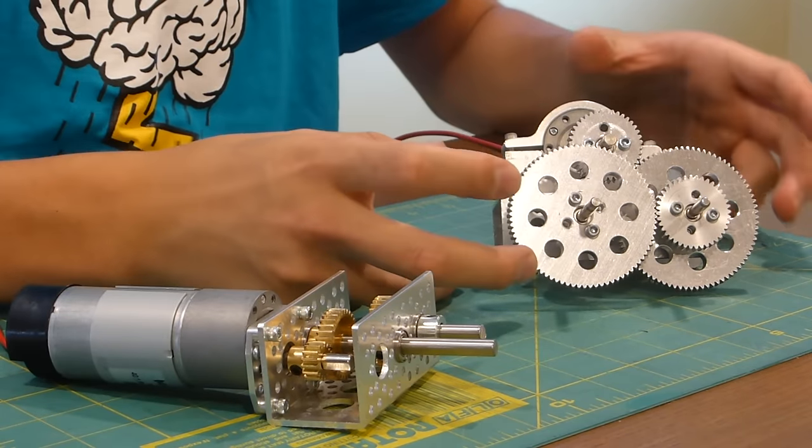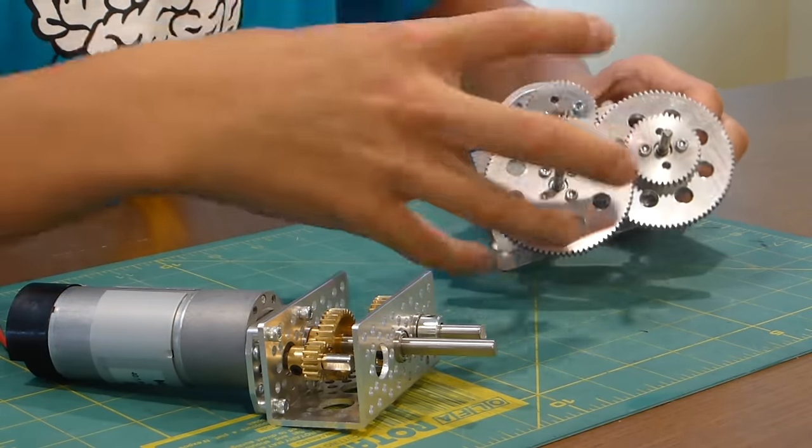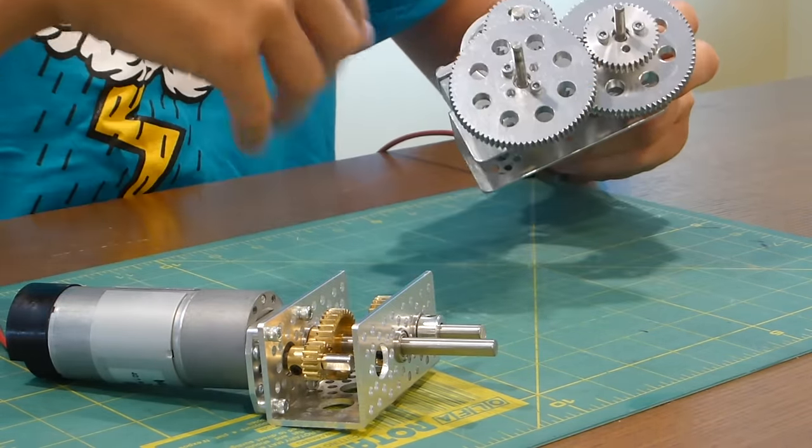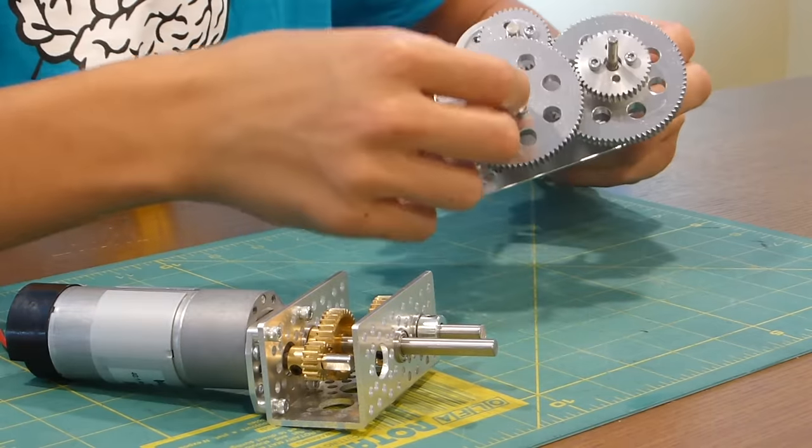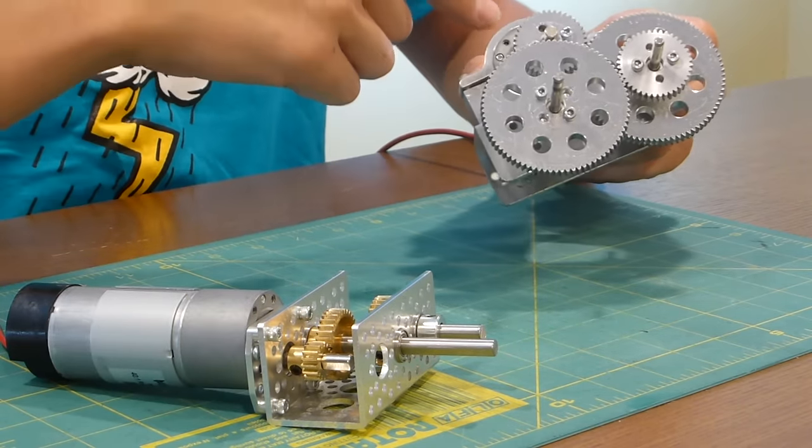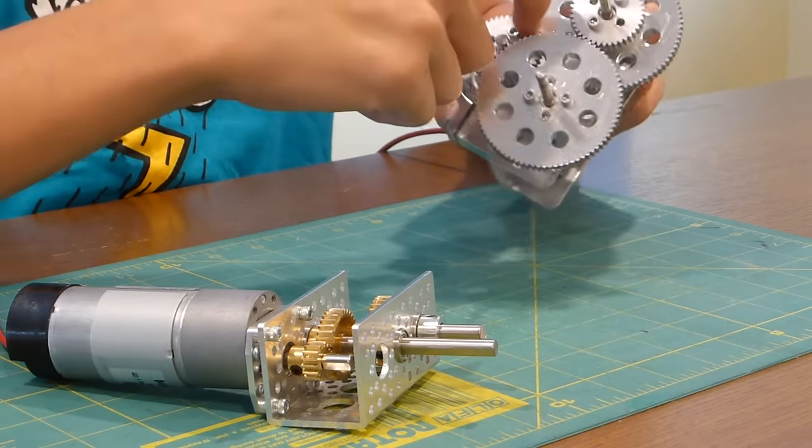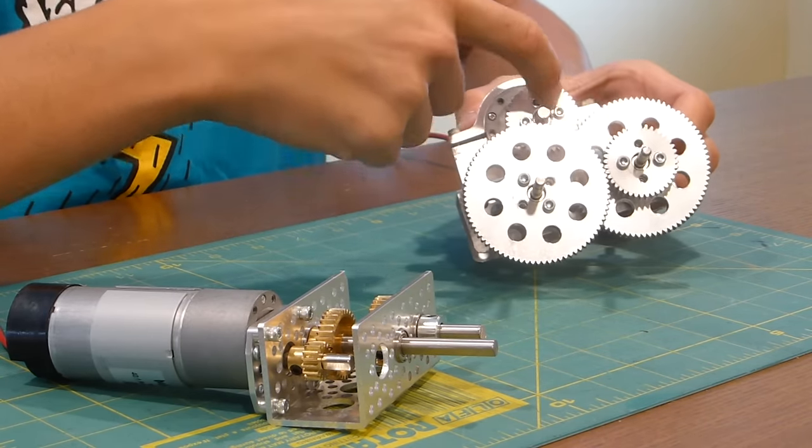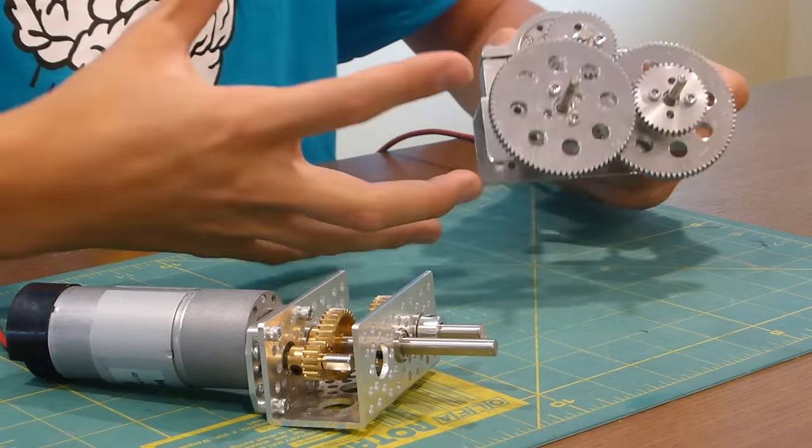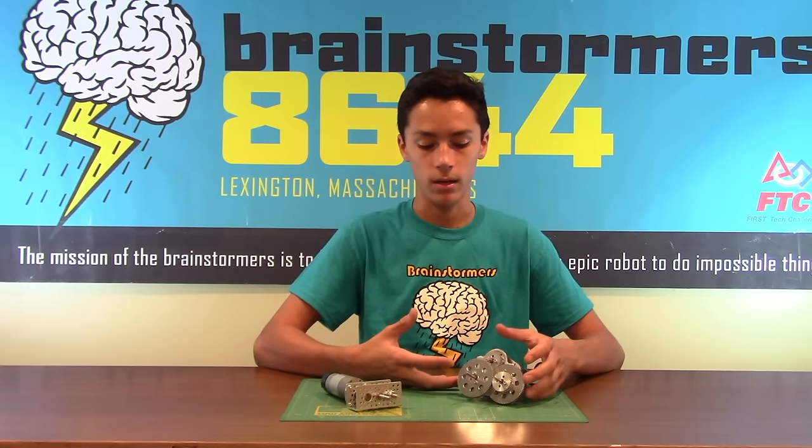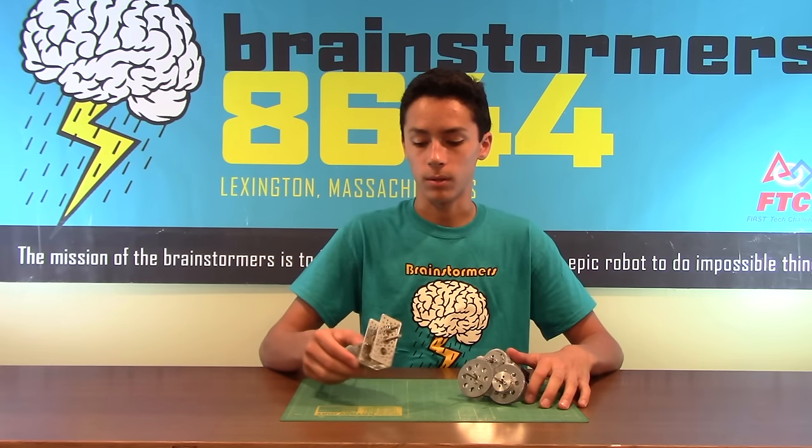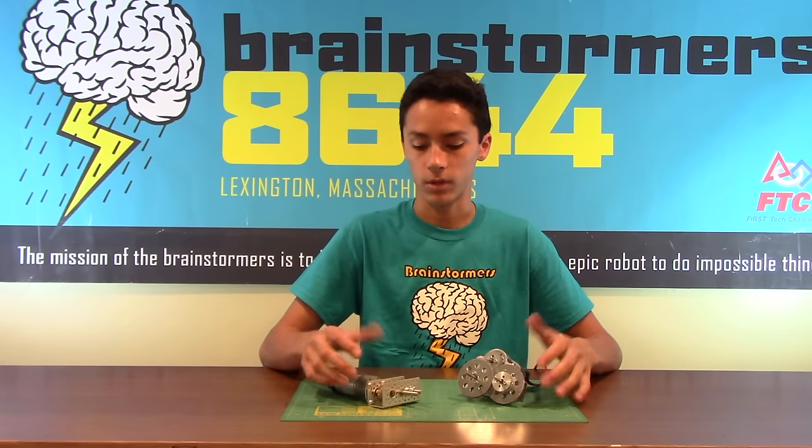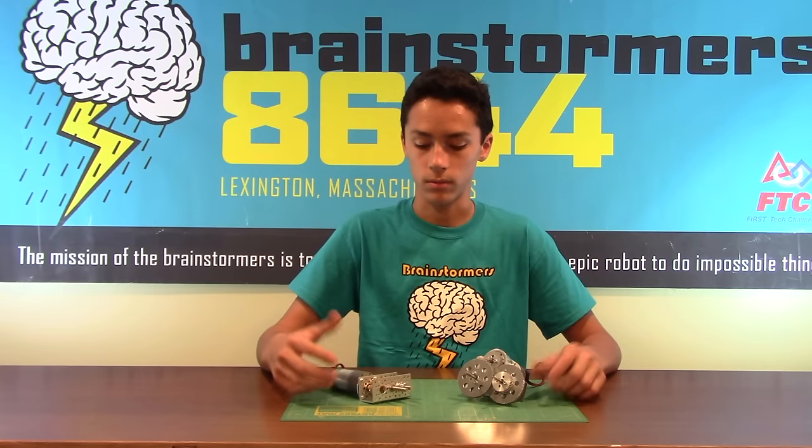And then over here we have the Tetrix version, which is much larger, much heavier. The gearing will end up the same, you're going to get the same output on this shaft, except you have to make sure that your gearing mesh is proper for the first two gears, and it's also just a lot heavier, a little bit more complicated, larger, and the profile of this much smaller, much lighter Actobotics gearbox is really beneficial.